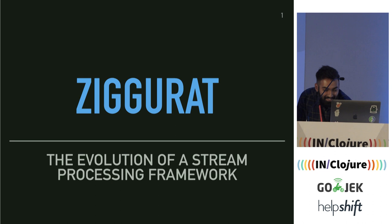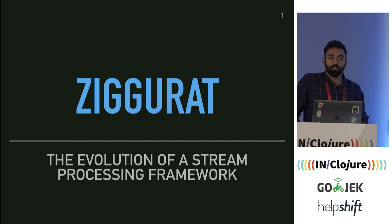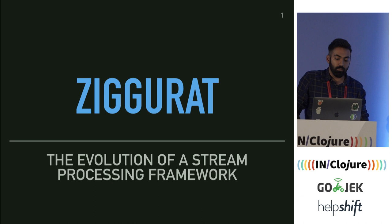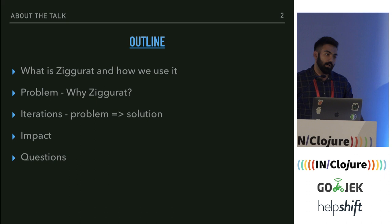What we're solving right now is standardizing deployments. Event sourcing is a problem we're focusing on, and today's talk is about how we're enabling event sourcing at Gojek. We have released a framework called Ziggurat, and I'll explain what Ziggurat is and how we use it at Gojek.